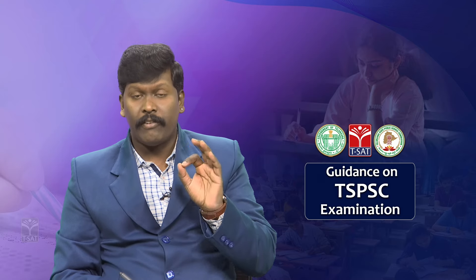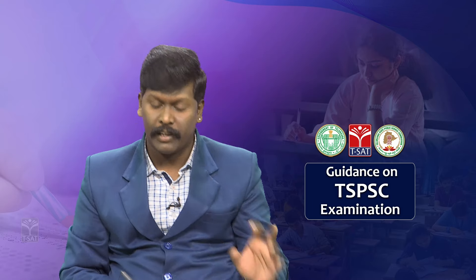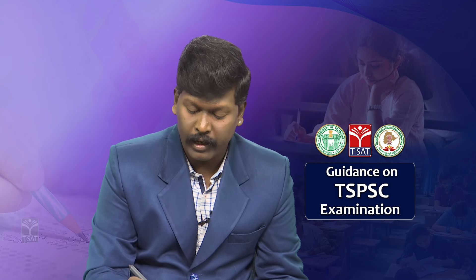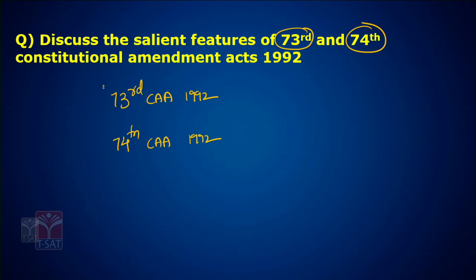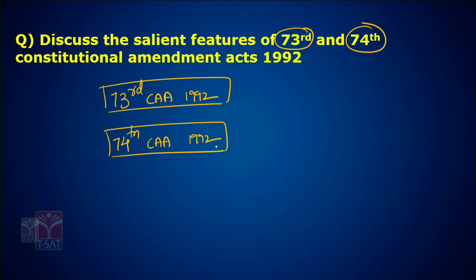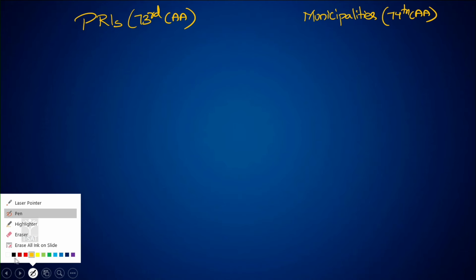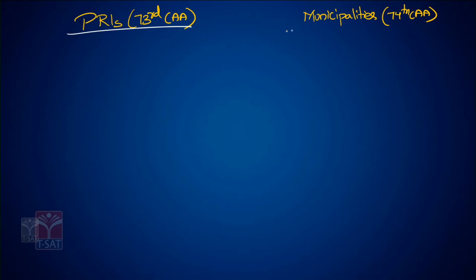The next question: Discuss the salient features of the 73rd and 74th Constitutional Amendment Acts. The 73rd Constitutional Amendment Act, 1992, pertains to Panchayati Raj Institutions, and the 74th Constitutional Amendment Act, 1992, pertains to municipalities. Let us first see the 73rd, then the 74th — first similarities, then differences.